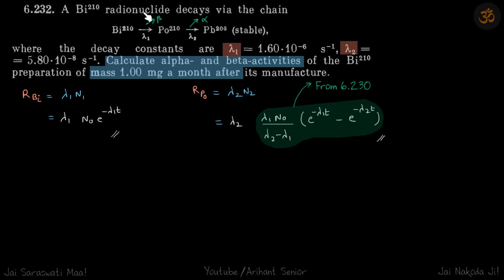A bismuth radioactive nuclei decays with this chain reaction. Decay constants are given lambda 1 and lambda 2, and we need to calculate alpha and beta activities.